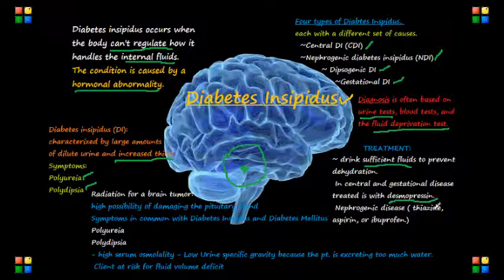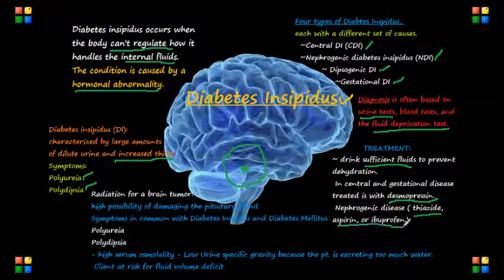Nephrogenic diabetes insipidus can be treated by addressing the underlying cause, using thiazide, aspirin, or ibuprofen.